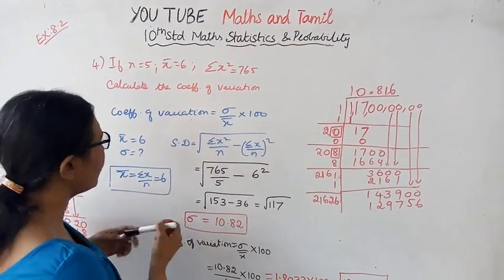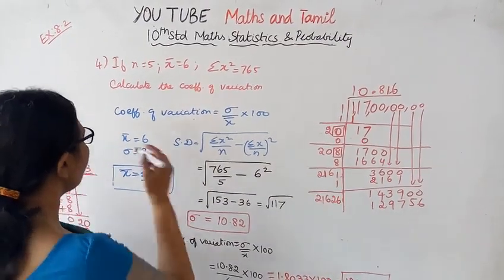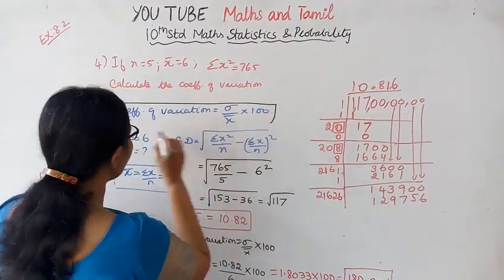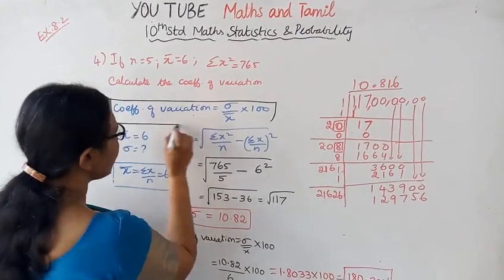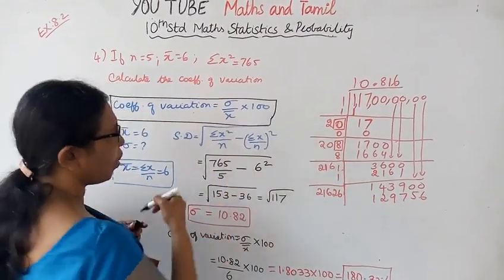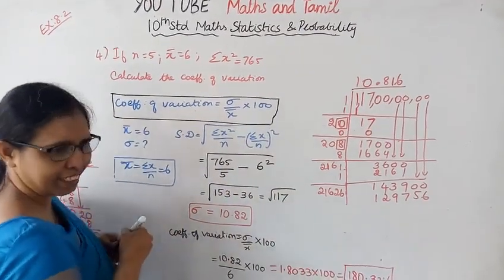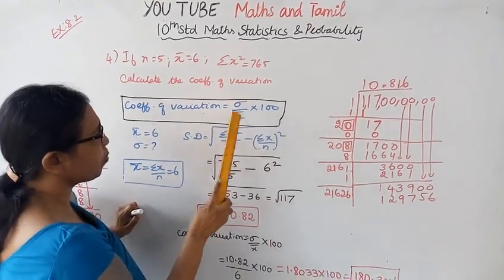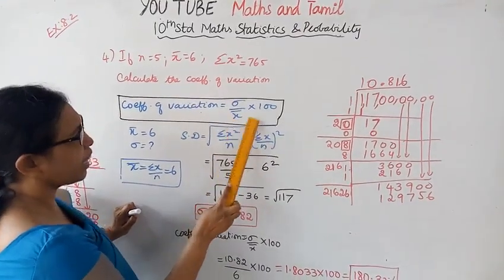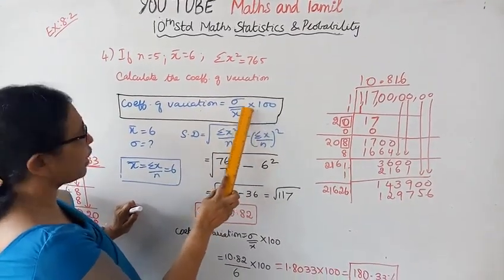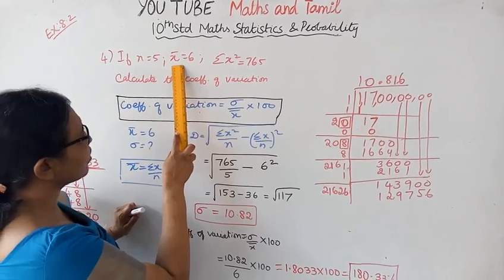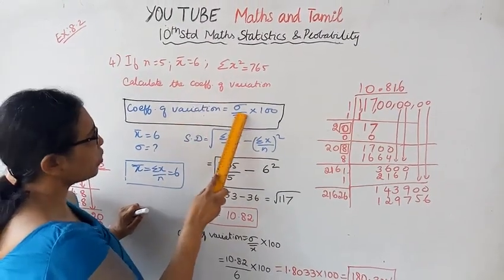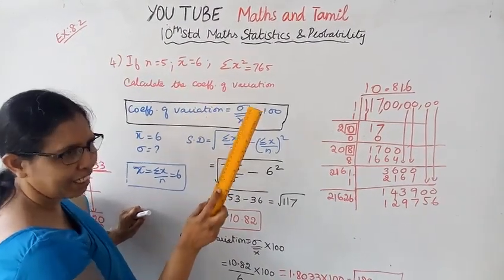The formula is: coefficient of variation equals sigma divided by x-bar, multiplied by 100. So CV = (σ / x̄) × 100. Here x-bar equals 6 and sigma is what we need to find.